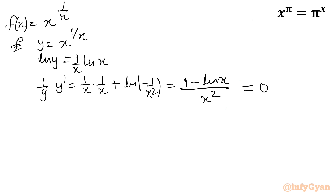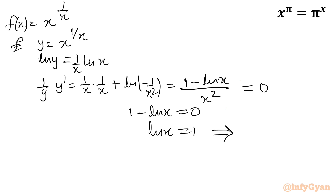For the critical point, I set y' = 0. Since y is a non-zero value, we need 1 − ln x = 0, which gives ln x = 1, implying x = e. This is our one critical point.